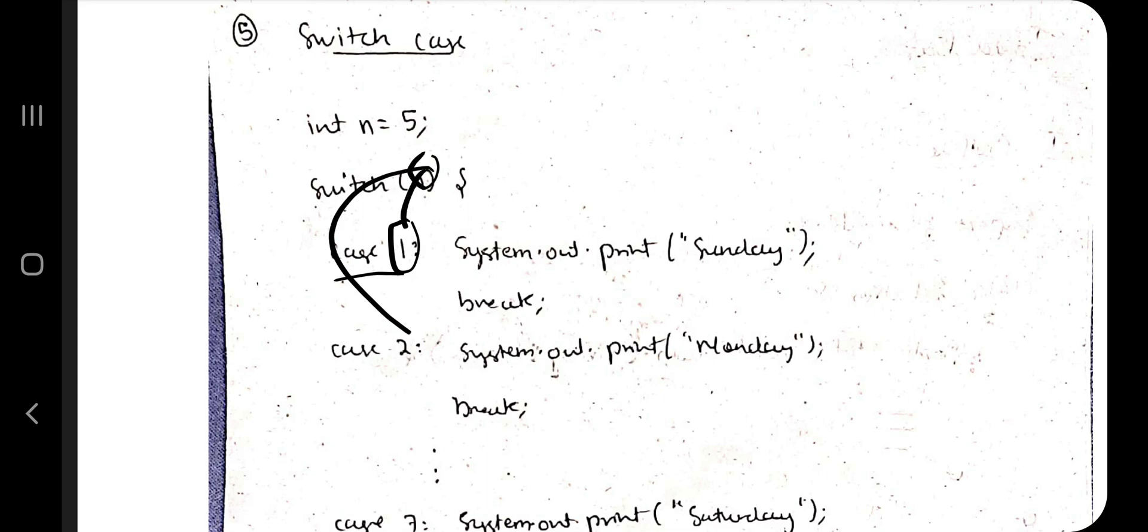So it will be checking if n value is 1 or not, if n value is 2, if n value is 3, like that. Each value it will be checking, whichever value it matches it will do the following operation what is present here. One thing we need to keep in mind: write break statement after each of this statement. So that's how the switch case statement works.